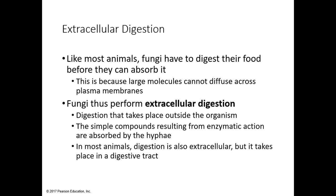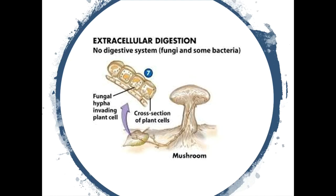Looking at this diagram, here is the mushroom, and extending off of the fungi there is the mycorrhizae, which is made up of hyphae. It invades the plant cell and digests the nutrients from within. The digestion is happening outside — enzymes are released and cells are broken down that way. This is essentially the same way in which we digest.